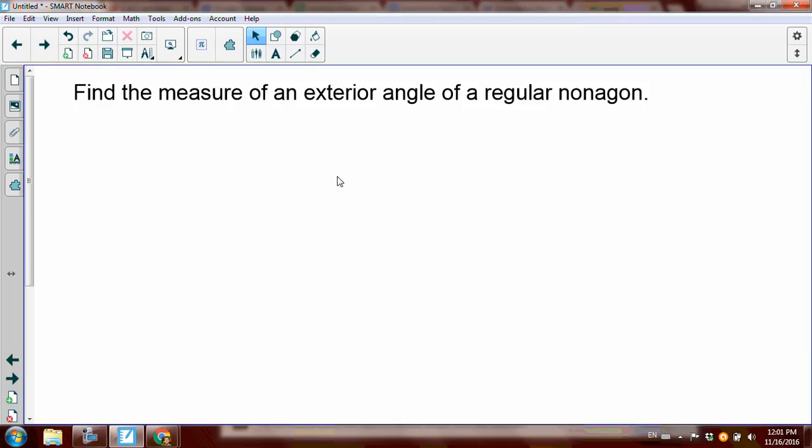Suppose you want to find the measure of an exterior angle of a regular nonagon. You can't do this problem unless the polygon we're talking about is a regular nonagon or regular polygon, meaning that every exterior angle will have the same measure.